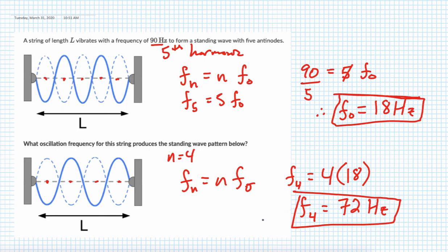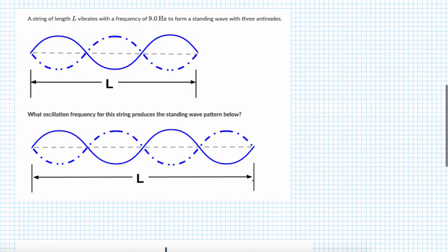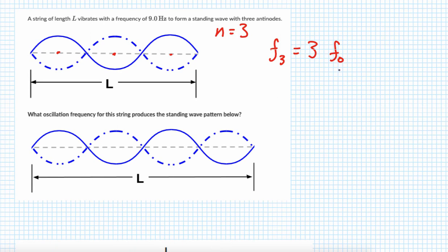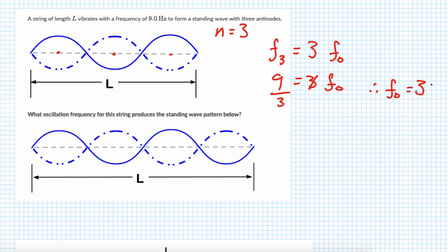Here's the same process but going bigger. The string vibrates with a frequency of 9 Hertz to form a standing wave with three antinodes, so that's the third harmonic. The frequency of the third harmonic equals 3 times the fundamental, and since the third harmonic is 9 Hertz, we get 9 equals 3 times f-naught, so the fundamental frequency is 3 Hertz.